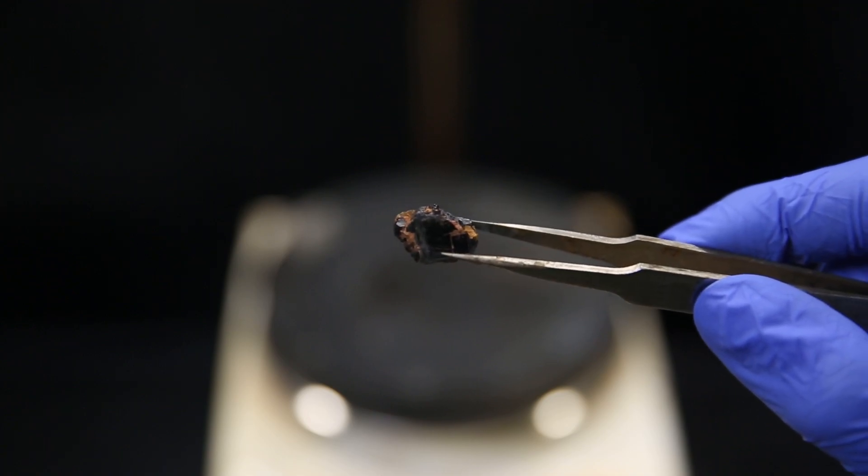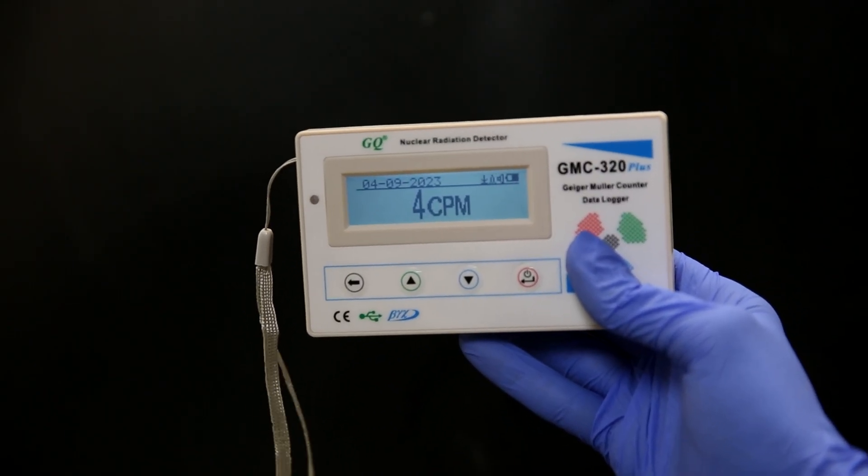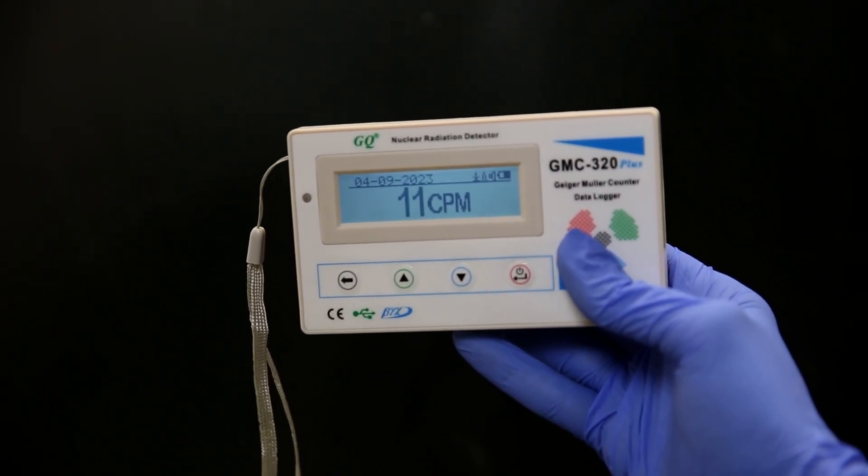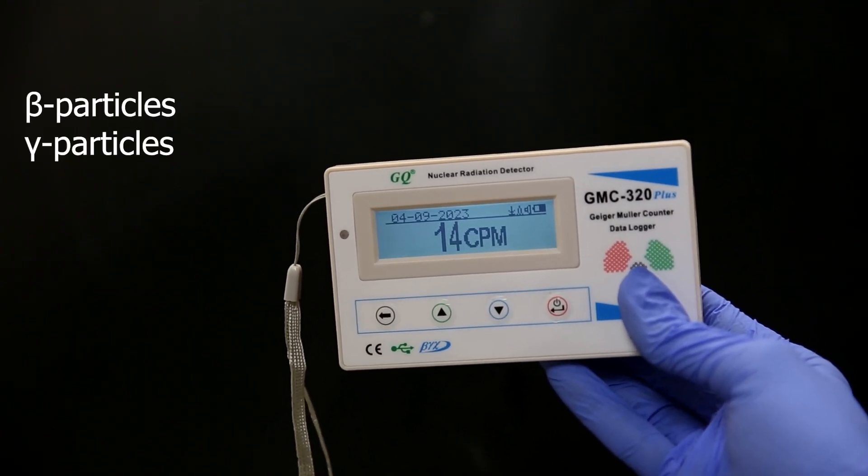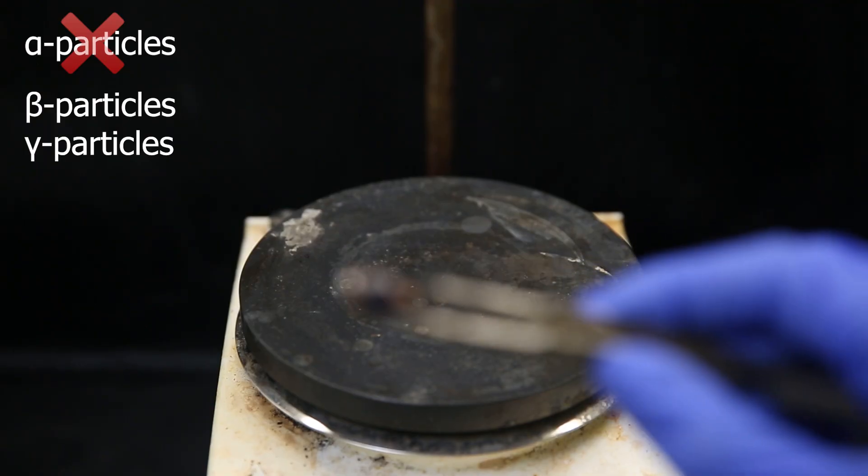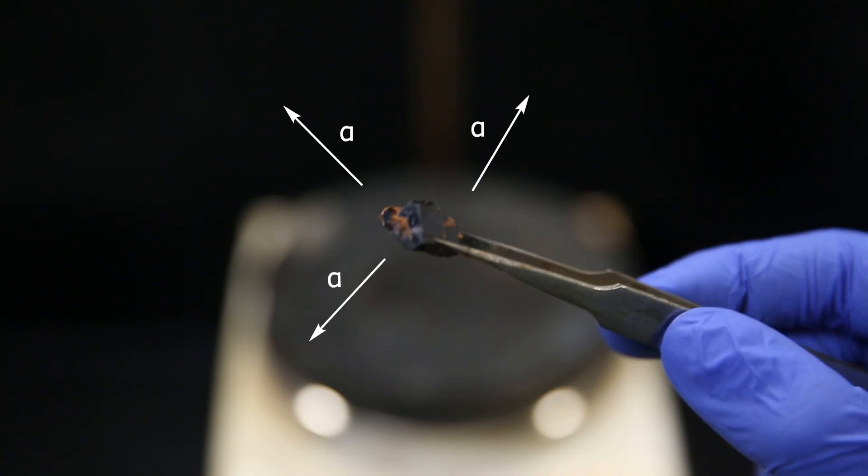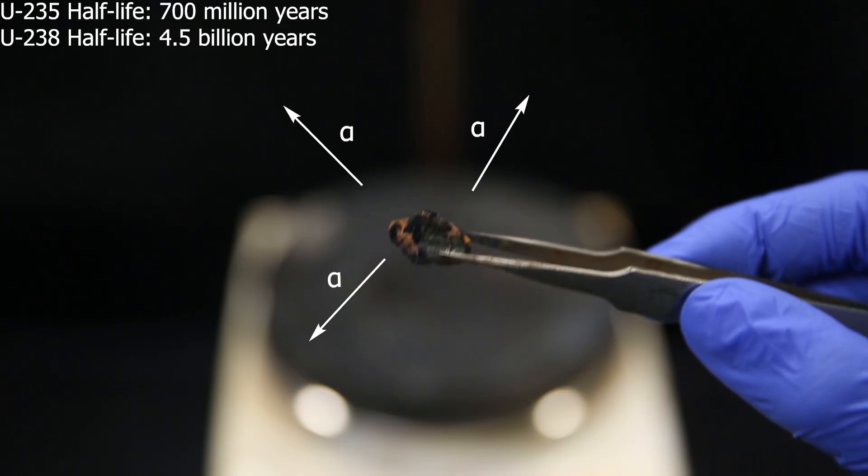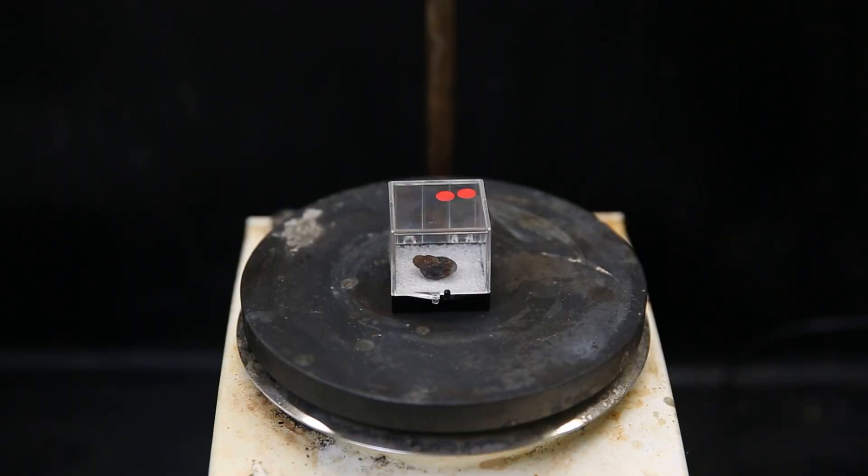Before I measure the radiation from the rock I will do a background check to measure the normal radiation levels at this location. So the background radiation is between 10 and 20 cpm here, which is only from beta and gamma particles, since this device cannot measure alpha particles. Now uranium only decays by emitting alpha particles, and uranium is also pretty stable, so it doesn't give off that much radiation when pure, especially if it has been depleted. But this is natural uranium and thus is a little more radioactive.